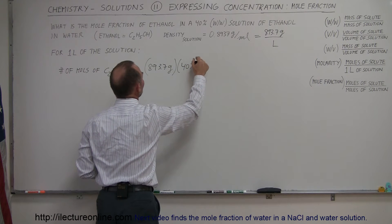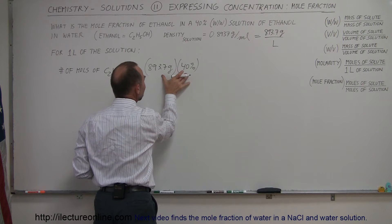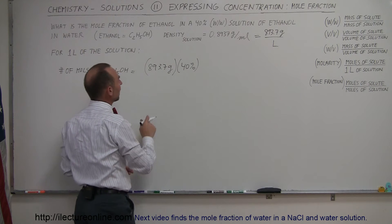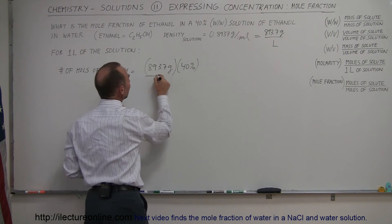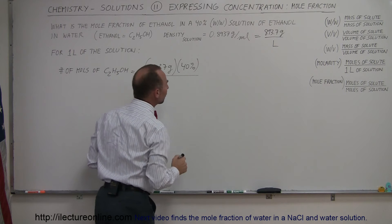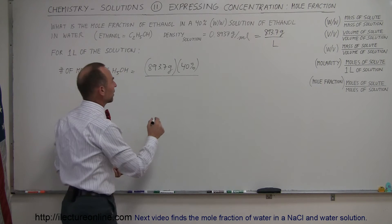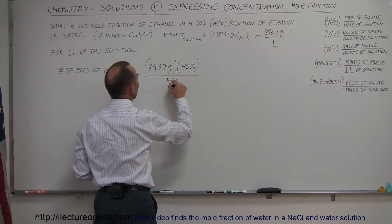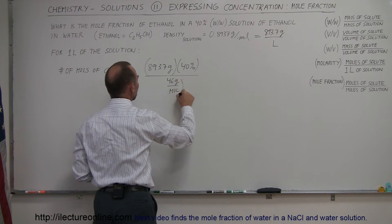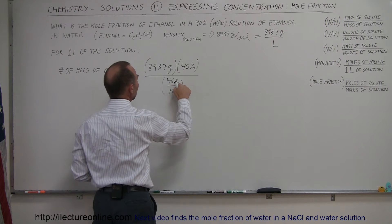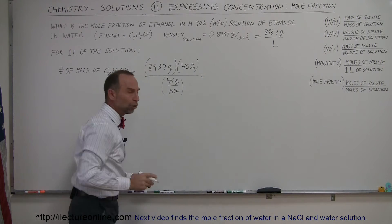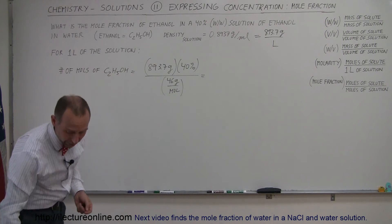Now we have the amount of ethanol in mass, in grams, in a one-liter solution, and then we divide that by the molar mass of ethanol. The molar mass of ethanol is 46 grams per mole. Notice that the grams will cancel out and we'll end up with moles, so this gives us the number of moles of ethanol.